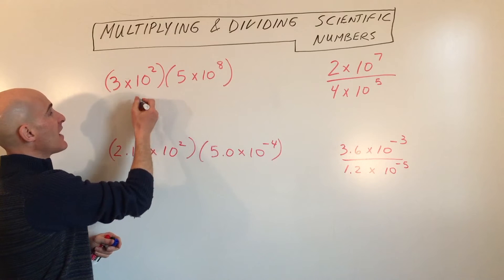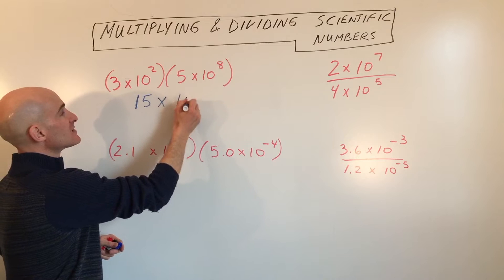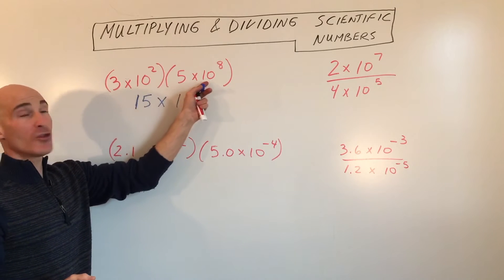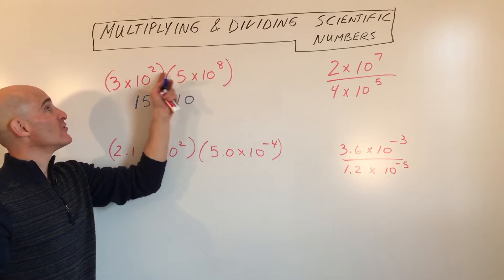So when you do that, 3 times 5 is 15 times 10 to the... Now remember, when you multiply and you have the same base, what do you do to the exponents? You add them, right?